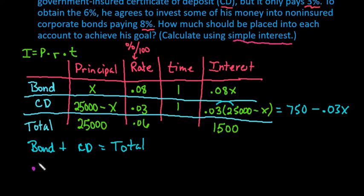So we would just take our interest from the bond, which is 0.08X, plus the interest earned from the CD, which is the 750 minus 0.03X, and we want a total of $1,500 in interest earned.